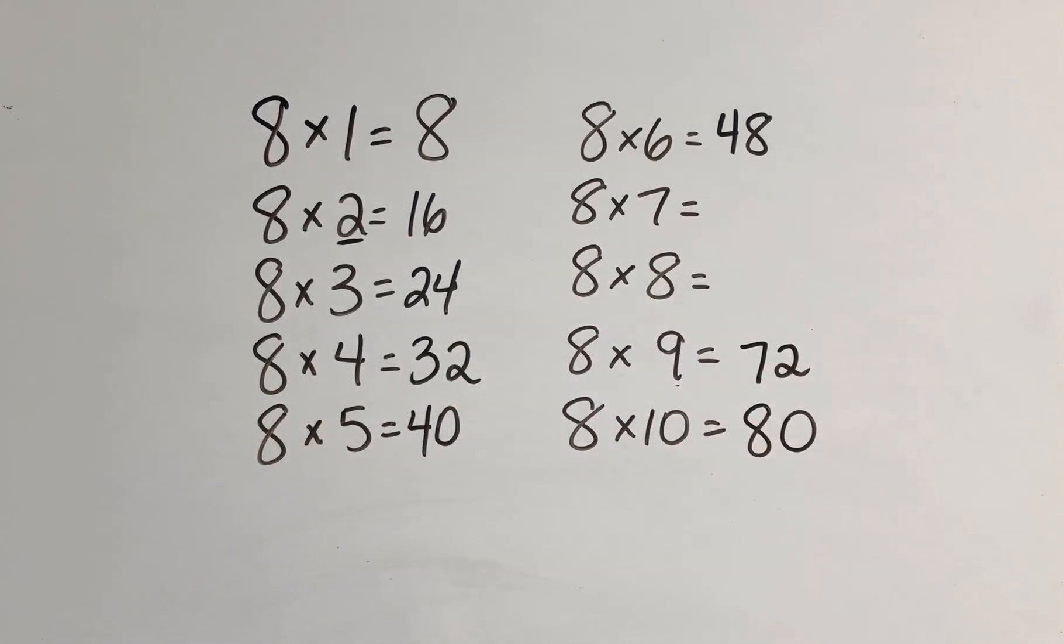Now 8 times 8, I remember from my square facts, because I remember that if I made an array that was 8 by 8, I just remember that one was 64.